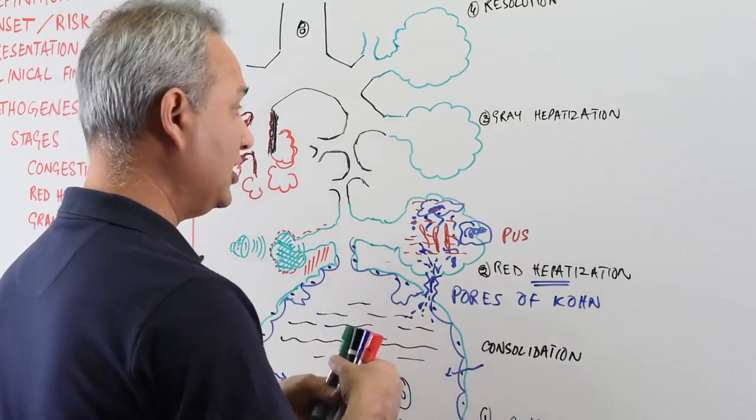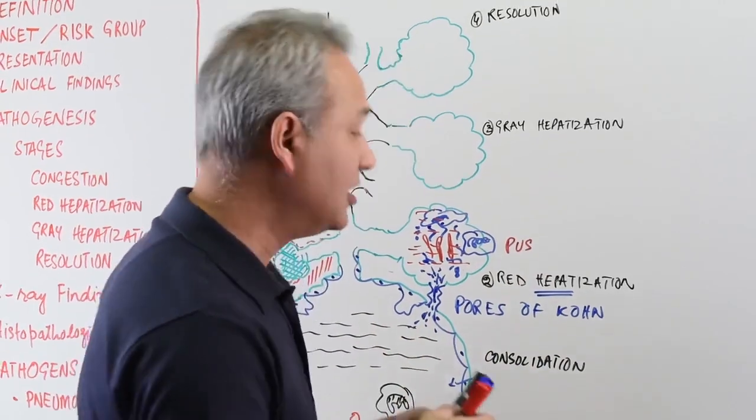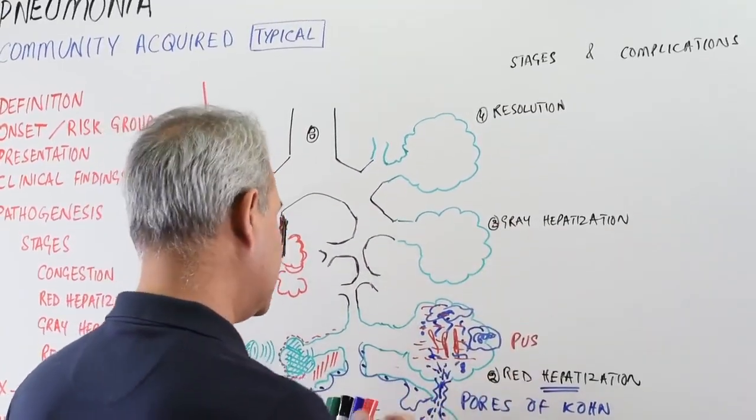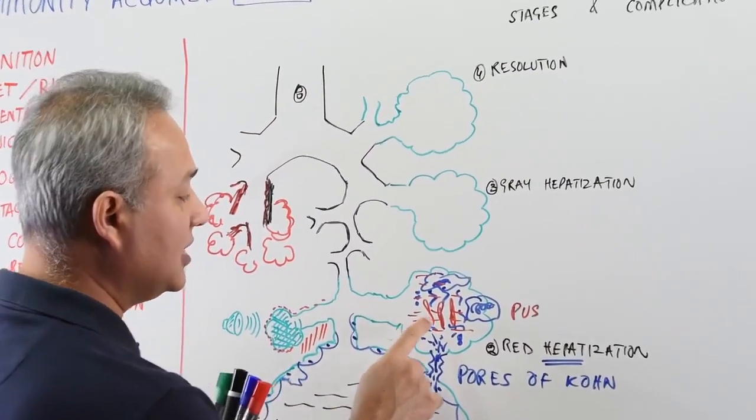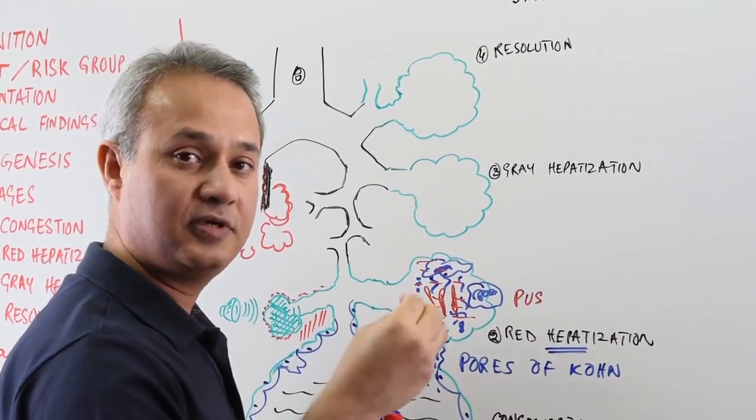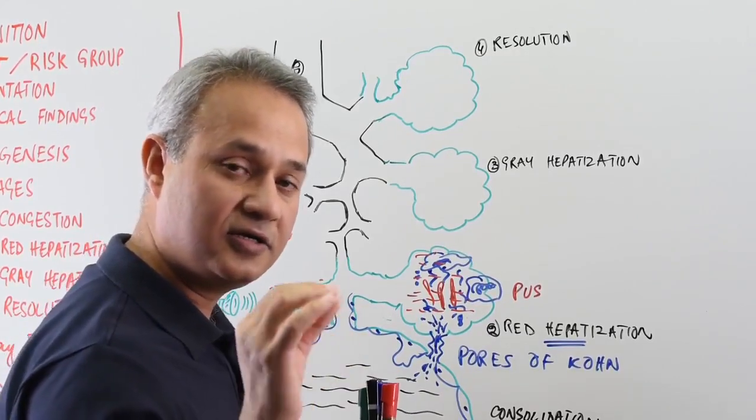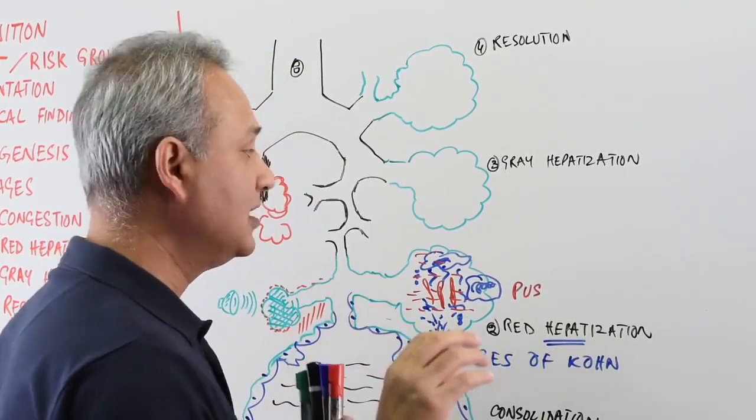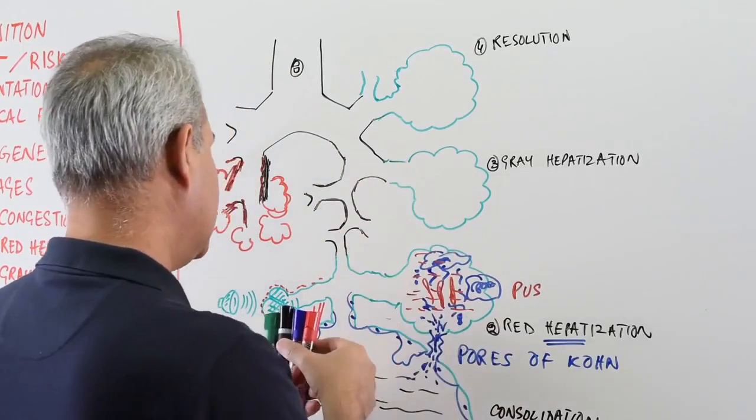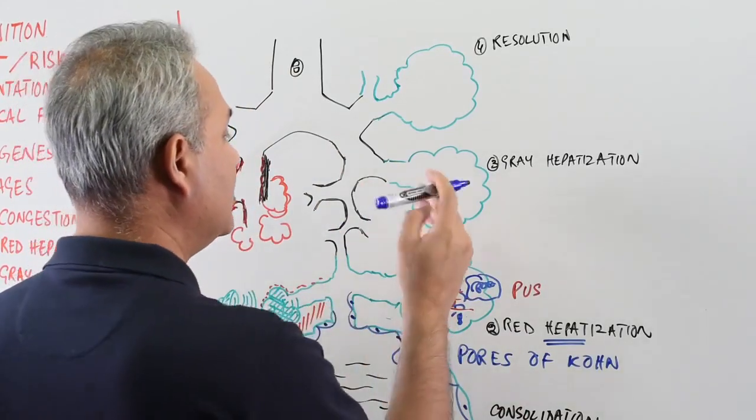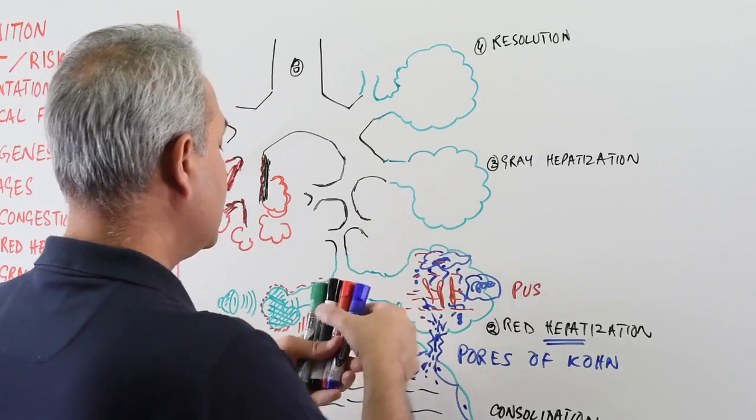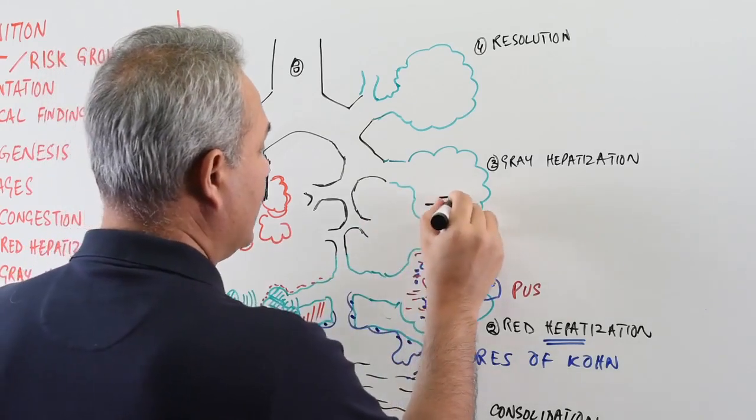So from red hepatization, we will reach the gray hepatization. What would happen? That is a few days later. And what is the gray hepatization? RBCs will become damaged and lysed and disappear. So the red color donated by the RBCs presence will go away and the rest of the material is present there.